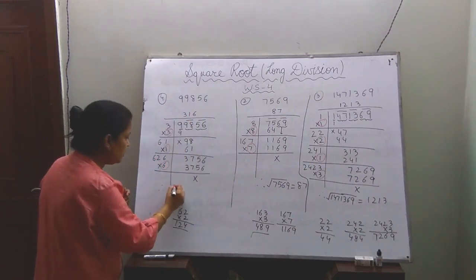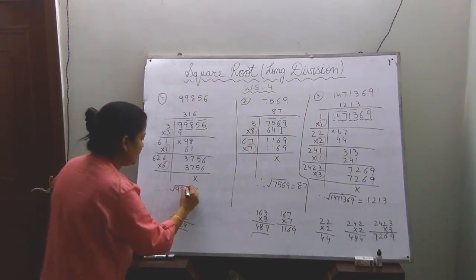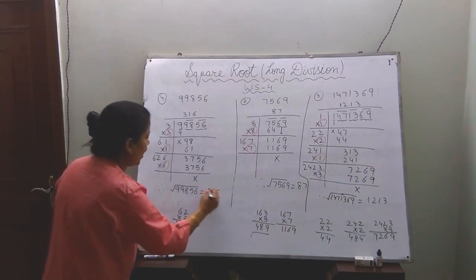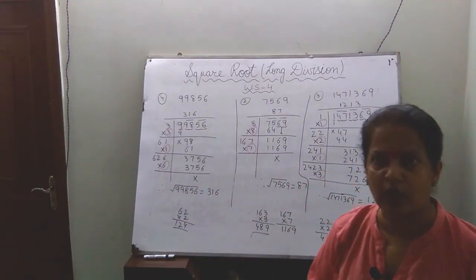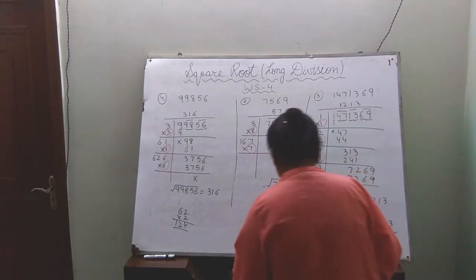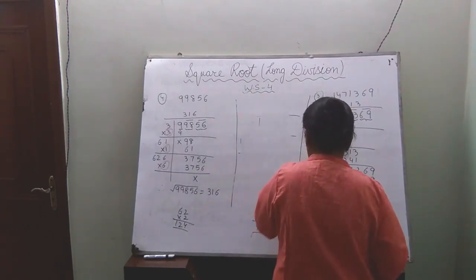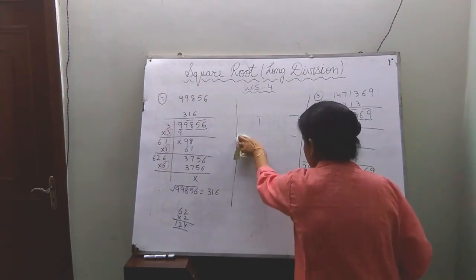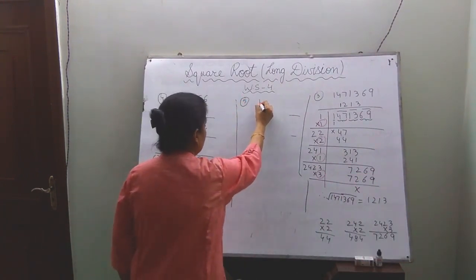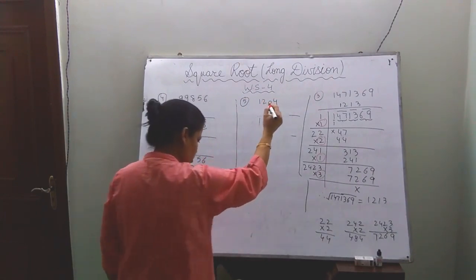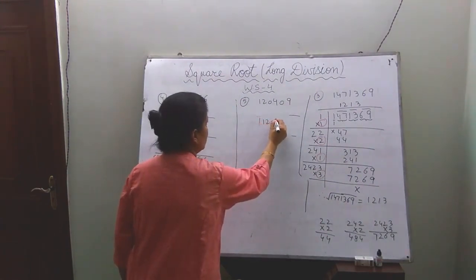Therefore the square root of 99856 is 316. I think this concept is clear to all of you. We will take one more question. The number is 120409.